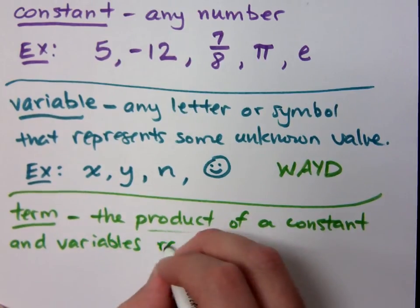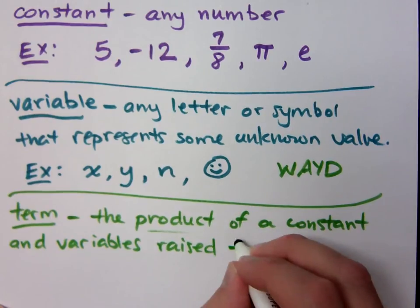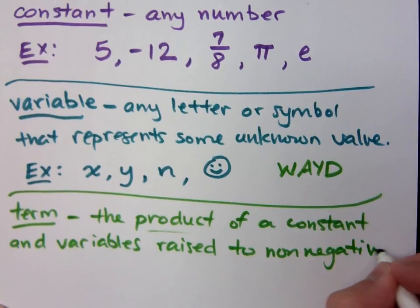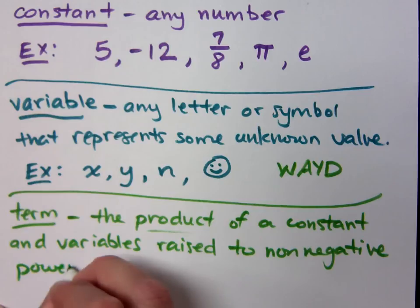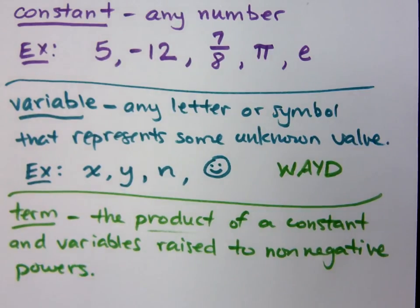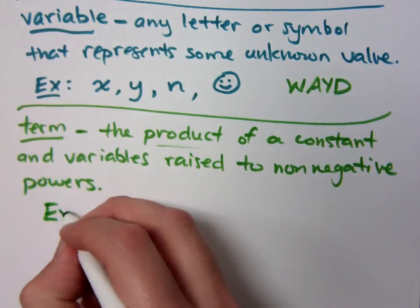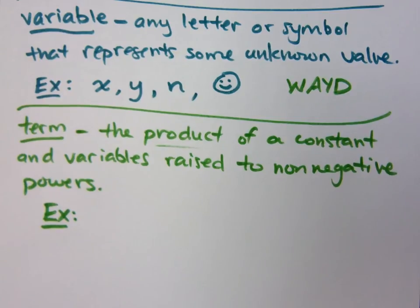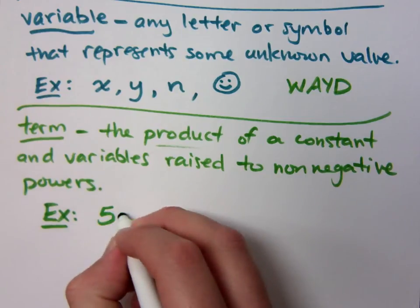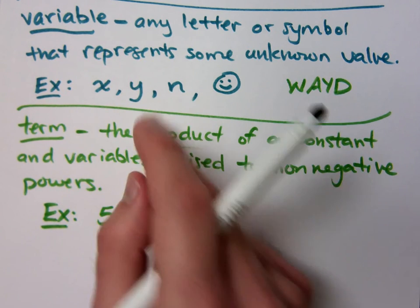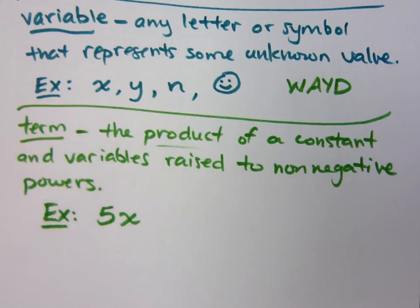It's the product of a constant and variables raised to non-negative powers. The term is the product of a constant and variables raised to non-negative powers. So examples of this would just be basically combining constants and variables through the operation of multiplication. So we had an example of a constant of 5 and a variable as x. So if I put those together and I say 5x, that creates a term for me. I mean, really, these guys individually are terms.